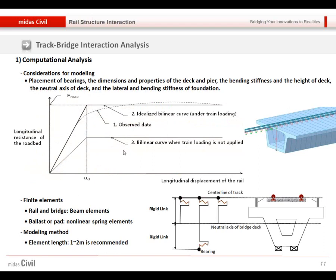And so this is the stiffness of the ballast. So when there is the train load and when there is no train load, as you can see the different shear resistance should be applied for this ballast.